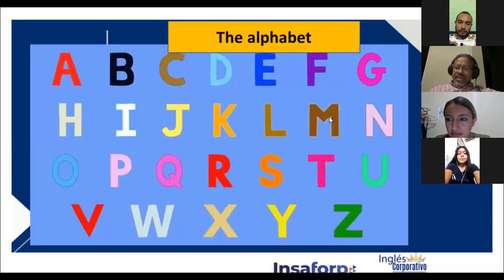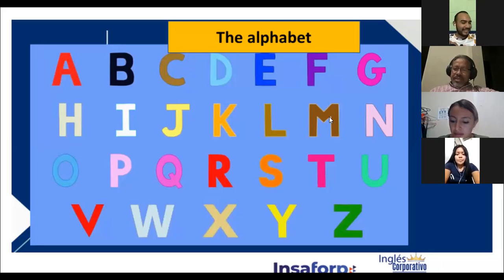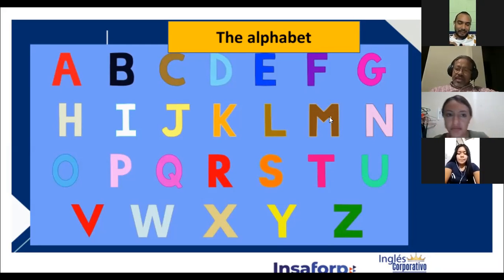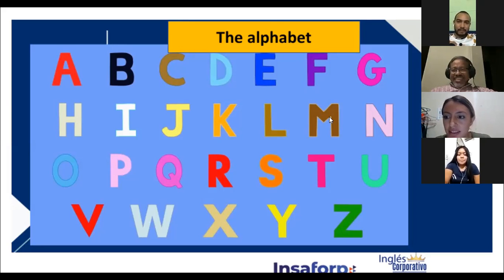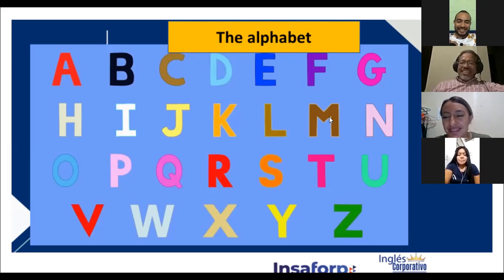Edgardo tries to spell Enrique: A-N-R-Q-U-E. Is that correct, Diego? No, no está correcto. Vamos de nuevo — Enrique. Trying again: E-N-R-I-Q-U-E. Correct. Is that correct, Diego? Yes. Very good, Edgar.